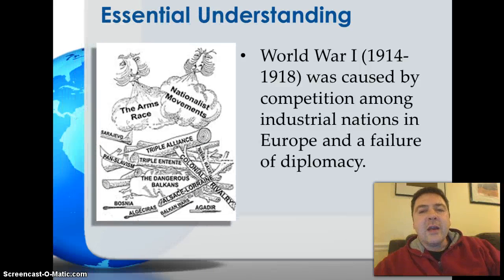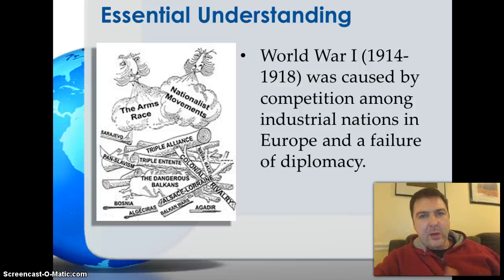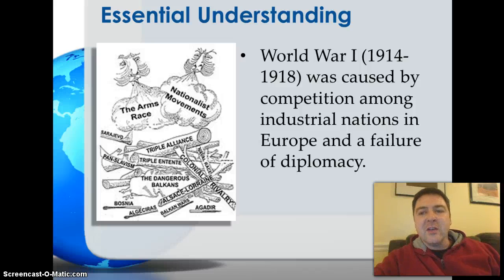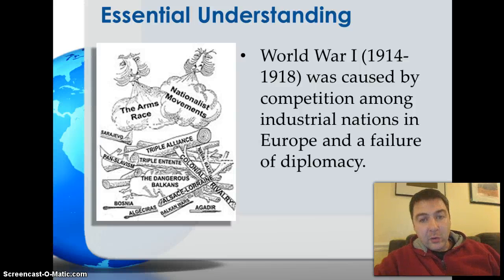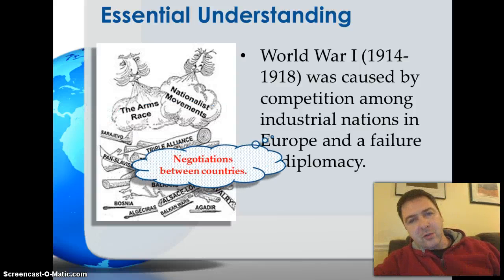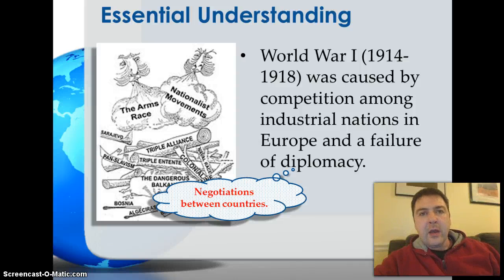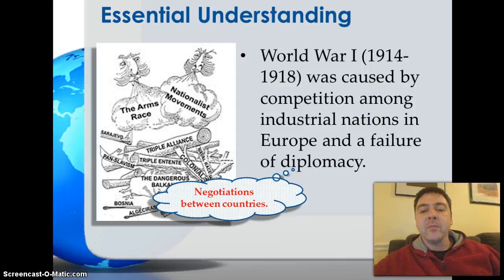World War I was fought during the four years 1914 through 1918 — about 100 years ago — and it was caused by the competition that existed among industrialized countries in Europe. We just finished in Standard 9 studying the Industrial Revolution. It had created intense economic and military rivalries between the major European powers. It was also the result of a failure in diplomacy. Diplomacy refers to negotiations between countries — diplomats are people who negotiate for countries with other countries.